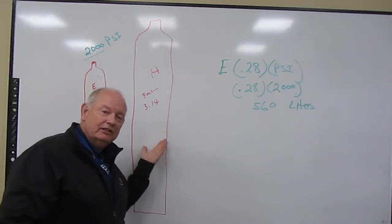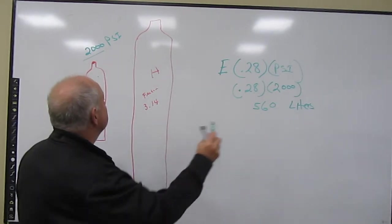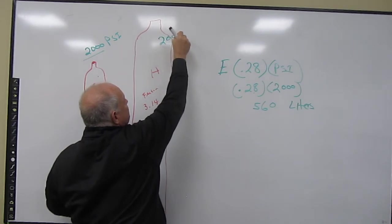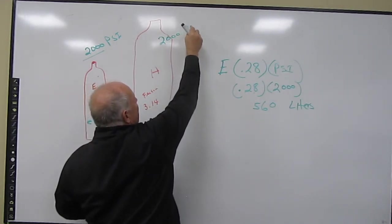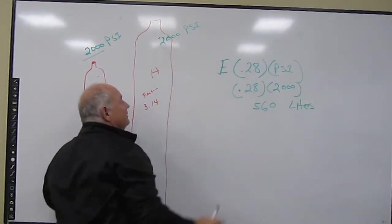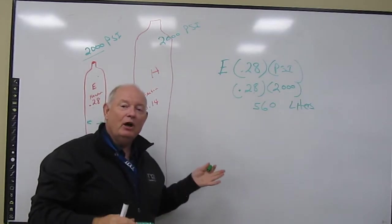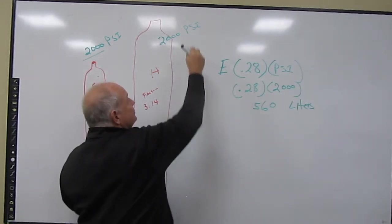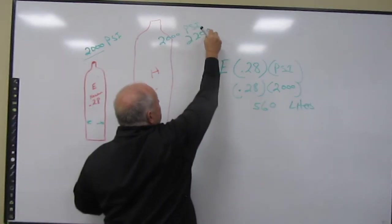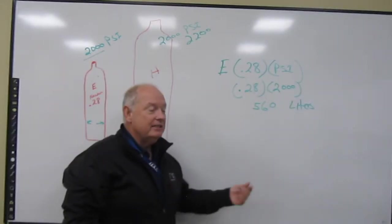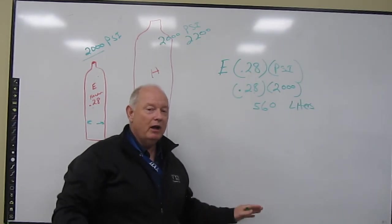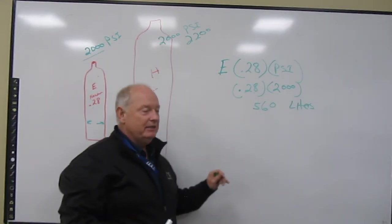Now we have an H-cylinder. An H-cylinder has the same rules. The fill, the full is two thousand pounds per square inch. But it can be overfilled 10%, so it may go to 2,200. You may go look at a cylinder and say this has 2,200 pounds per square inch in it—that's way overfilled. Well it's allowed to be 10% over.